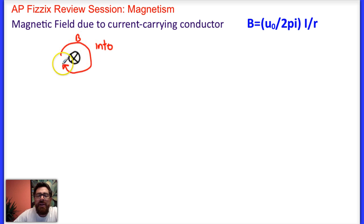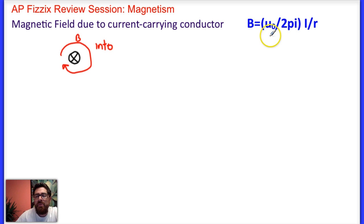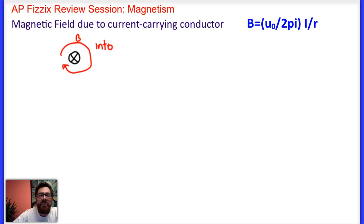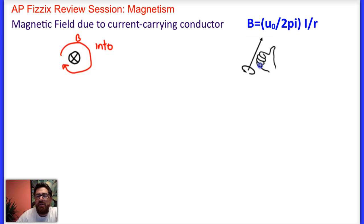So now we know the direction of the magnetic field based on the right-hand curl rule. The magnitude of that magnetic field can be found by mu-naught, the permeability of free space, divided by 2π times the magnitude of the current over R, the distance away from the current-carrying conductor. I have a graphic that illustrates the right-hand rule.